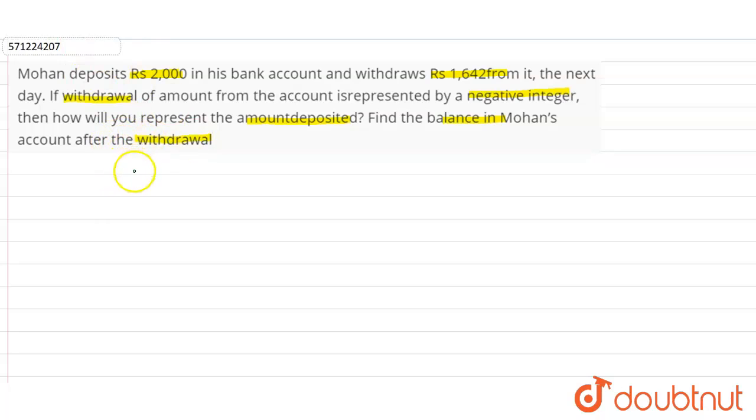So our question here says that withdrawal is represented by a negative integer. So negative integer means we have to write it as negative 1642.